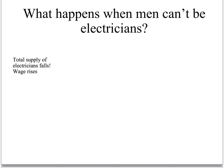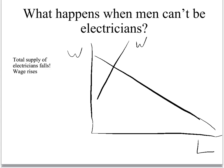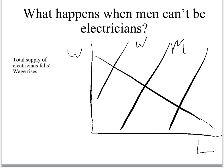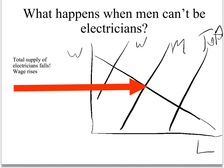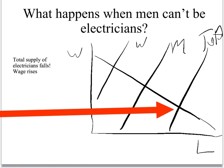What happens when men can't be electricians? We've got labor supply and demand, with a demand curve for electricians. We used to have women, men, and a total supply. At any wage, this number of women, this number of men, and the total. Given the labor demand and supply, in practice, given what's drawn here, there will be very few electricians at that wage if you throw out the men.